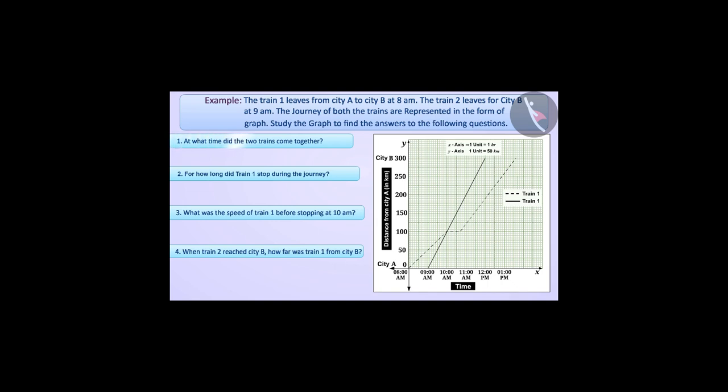At what time did the two trains come together? The graphs for the two trains meet each other at 10 a.m., indicating that the two trains came together at 10 a.m.